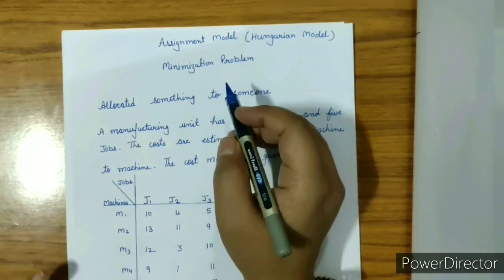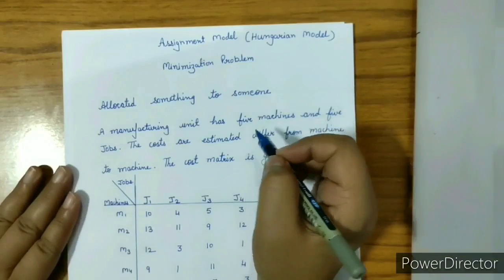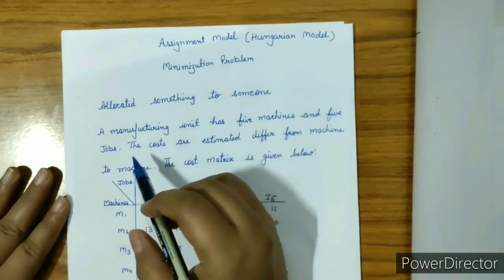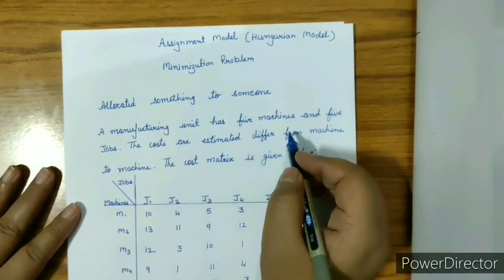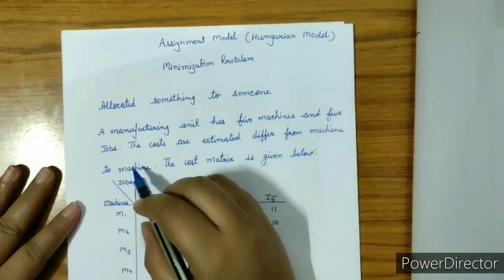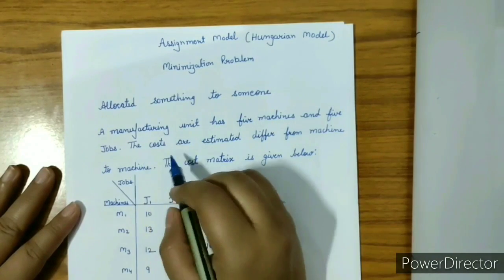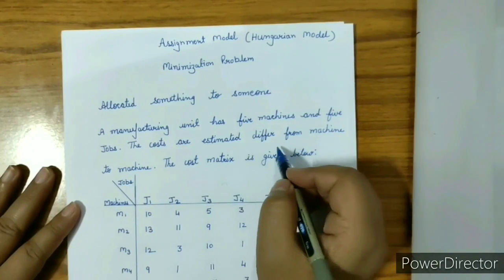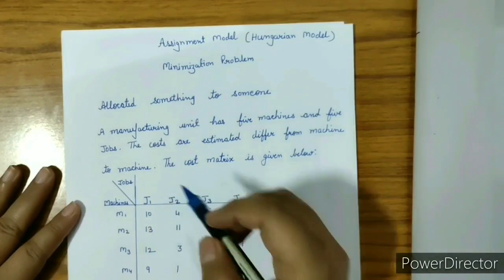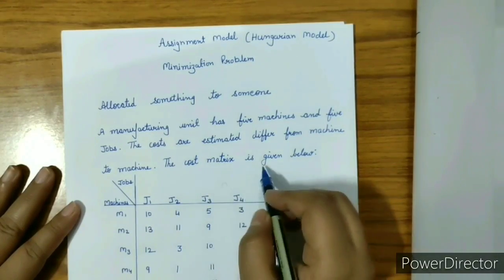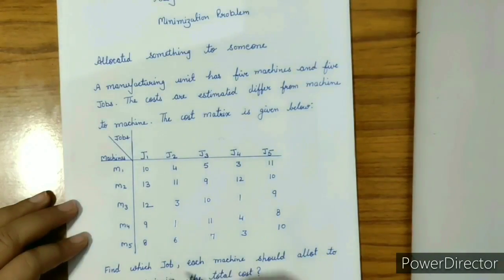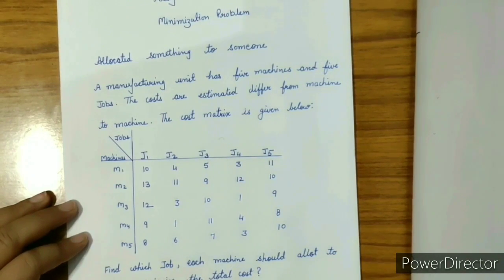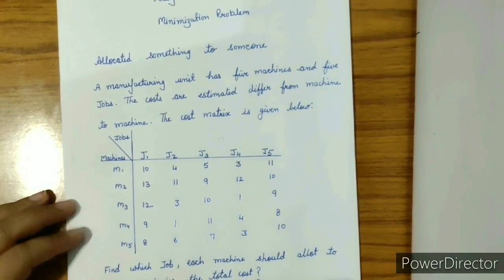Let us take an example to understand this model. Suppose a manufacturing unit has five machines and five jobs. The costs are estimated to differ from machine to machine. The cost matrix is given below. Each machine should be allotted to one of the five jobs to minimize the total cost.